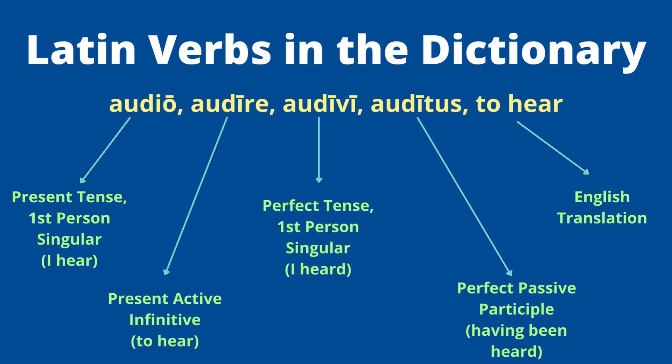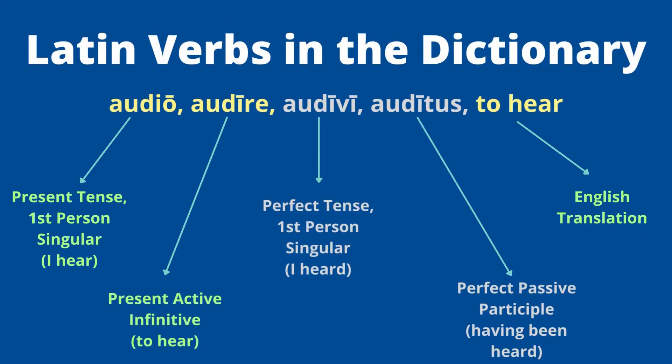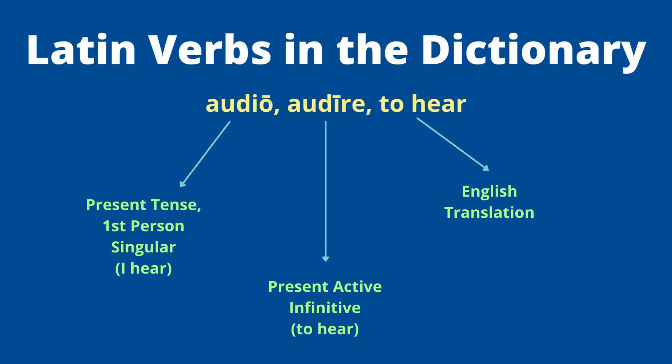For the verb 'audio, audire' meaning 'to hear,' it would be listed as audio, audire, audivi, auditus, and then the English translation 'to hear.' When dealing with the present tense, the only pieces you need are the first and the second principal parts — so for our purposes, all we need is 'audio' and 'audire.' The first principal part is the first person singular present tense, so 'audio' means 'I hear.'